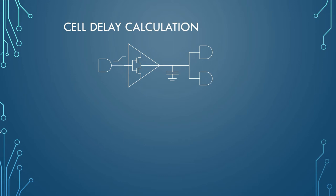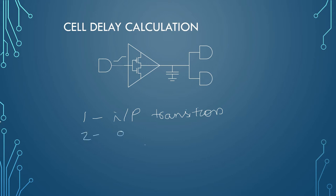Standard cell delay calculation depends on three different factors. The first is input transition — how the cell pulse is rising or falling affects the cell delay calculation. The second factor is output capacitance of your cell, referred to as C1.